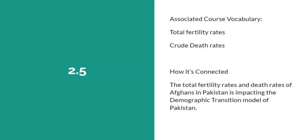My first connection is Topic 2.5. The associated course vocabulary is total fertility rates and crude death rates. How this is connected is that the total fertility rates and death rates of Afghanistan and Pakistan are impacting the demographic transition model of Pakistan along with the population pyramids.